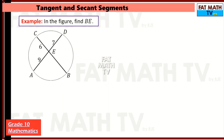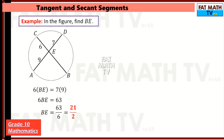Another example: AE is 9, DE is 7, CE is 6. We need to find BE. So BE equals 7 times 9 divided by 6, which is 63 over 6. Simplifying by dividing both numerator and denominator by 3 gives 21 over 2, or 10 and a half, or 10.5.